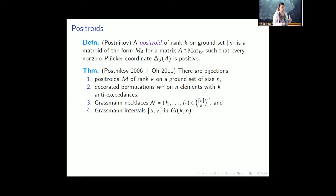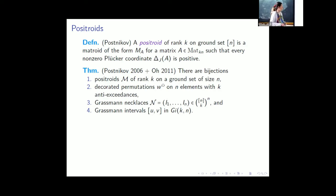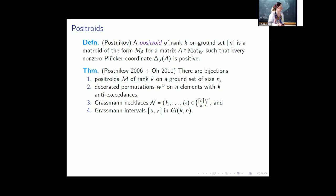Positroids are in bijection with decorated permutations, with Grassmann necklaces, and with certain intervals in Bruhat order in the symmetric group — what I call Grassmann intervals. These are intervals where v is a Grassmannian permutation. A k-Grassmannian permutation has the first k numbers in v in one-line notation increasing and the last n−k numbers also increasing, with possibly a descent in position k. Anything below v in Bruhat order counts as a Grassmann interval.